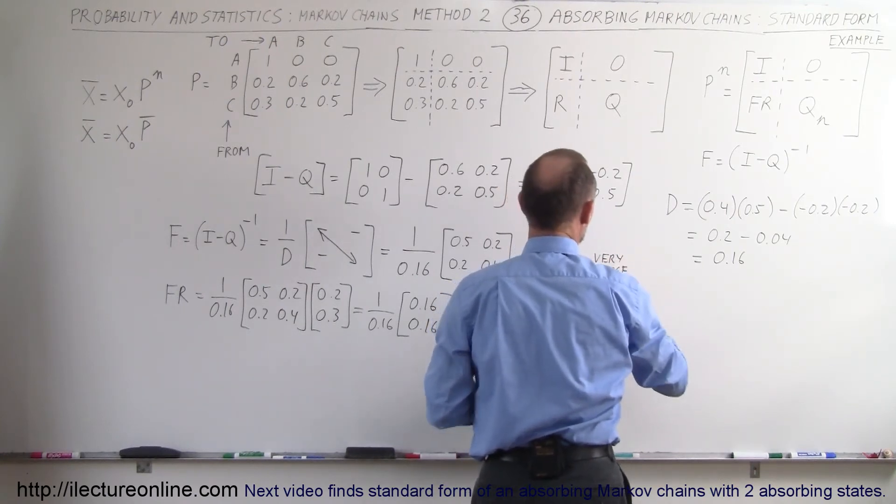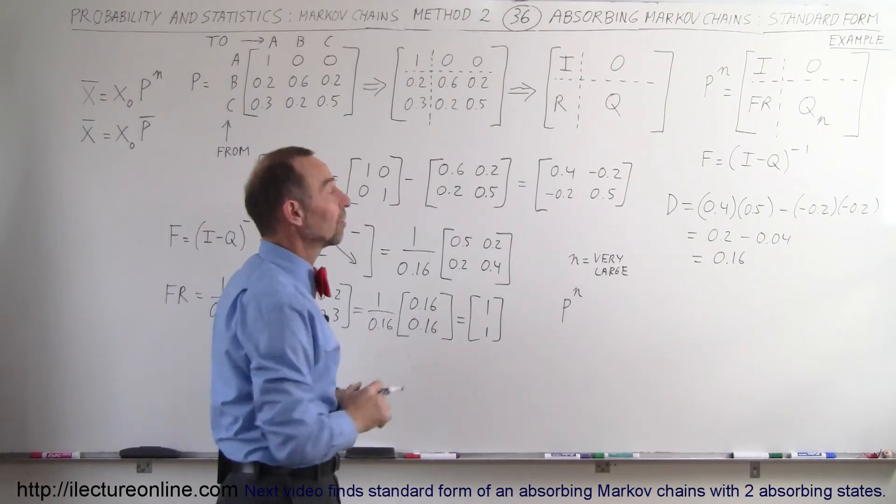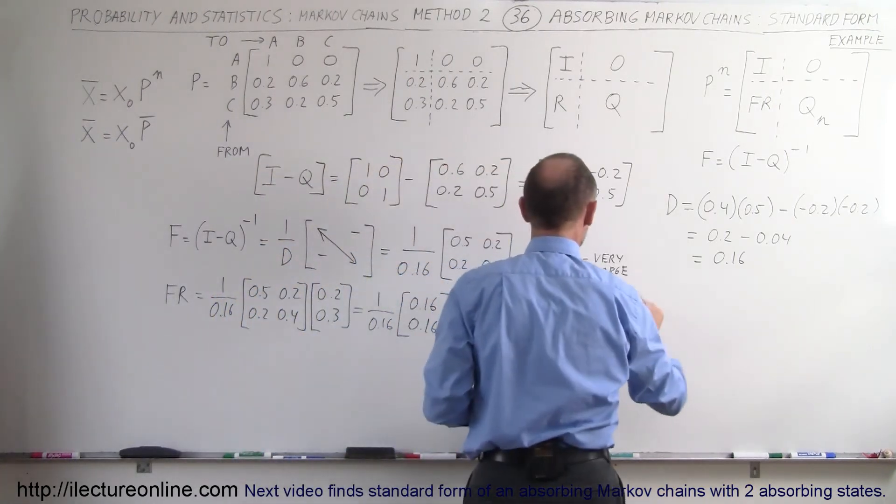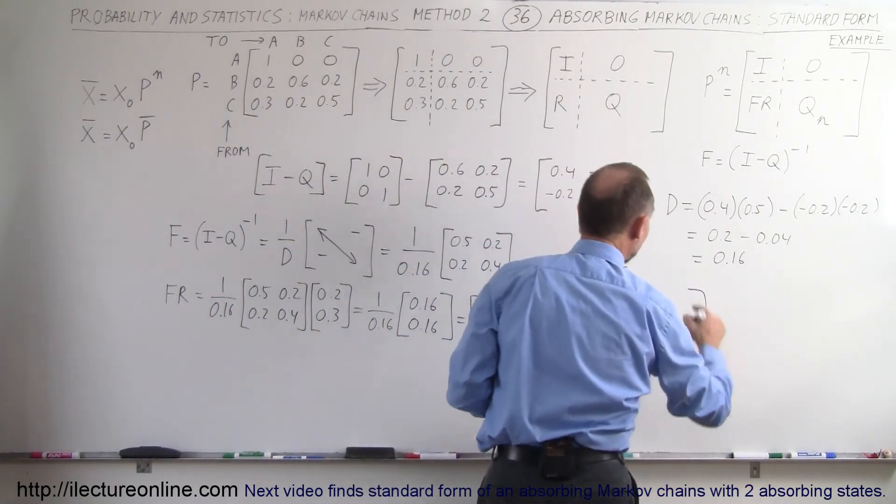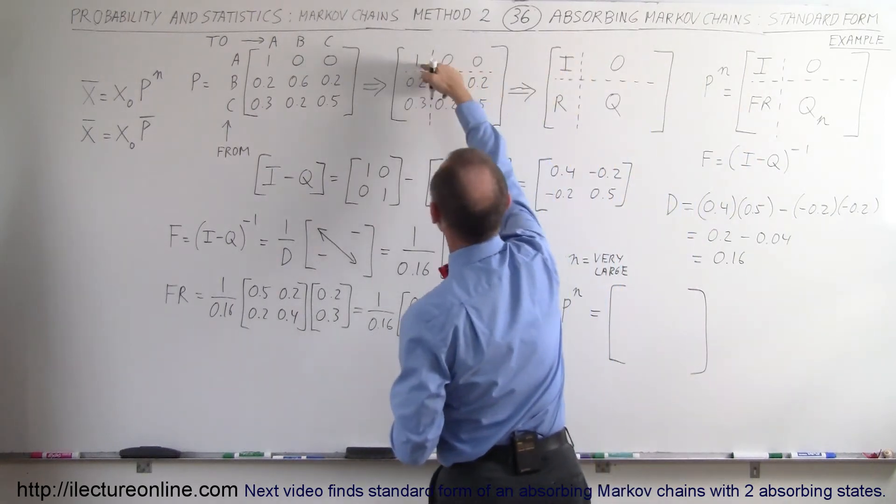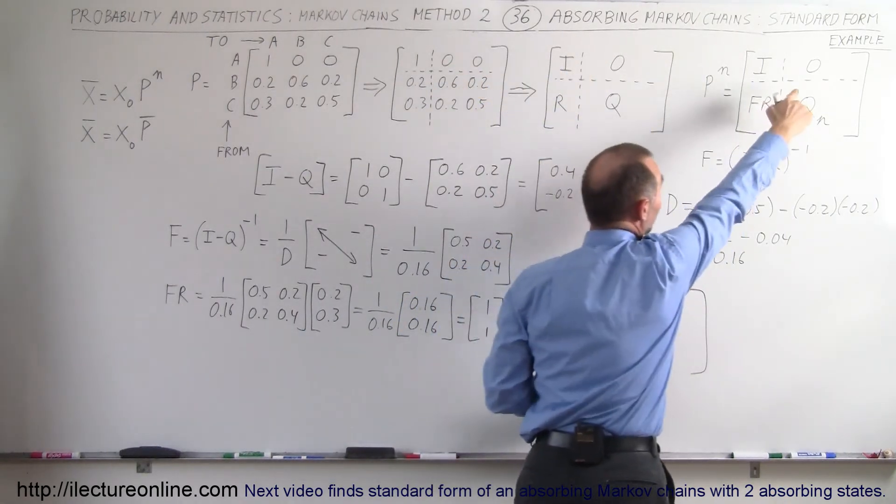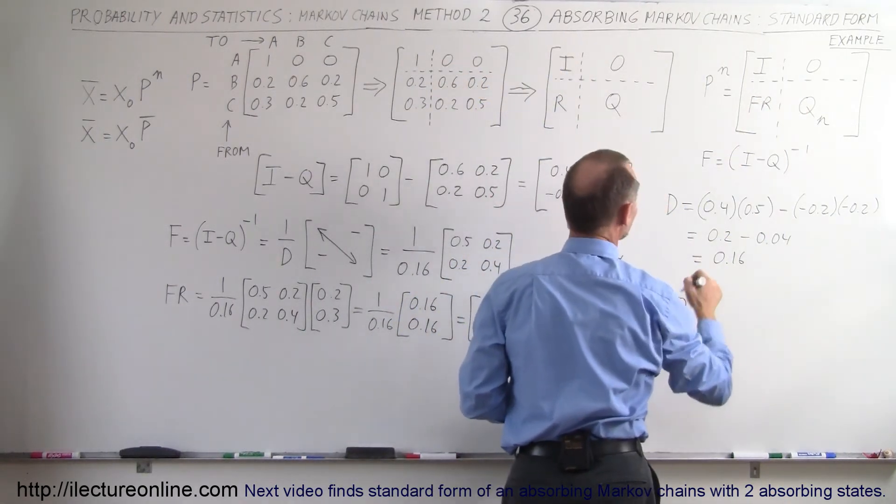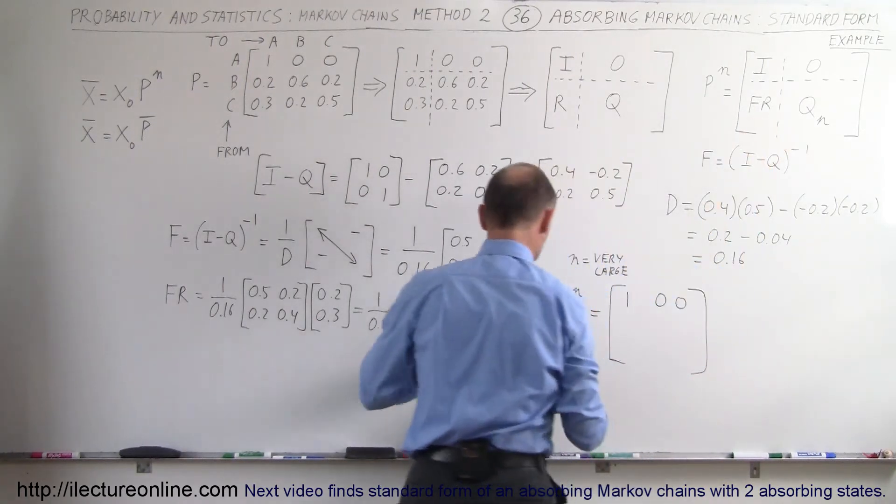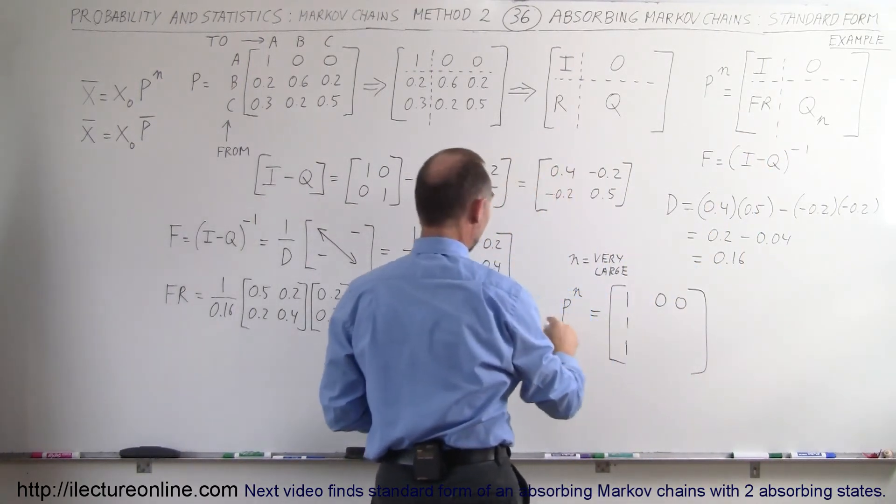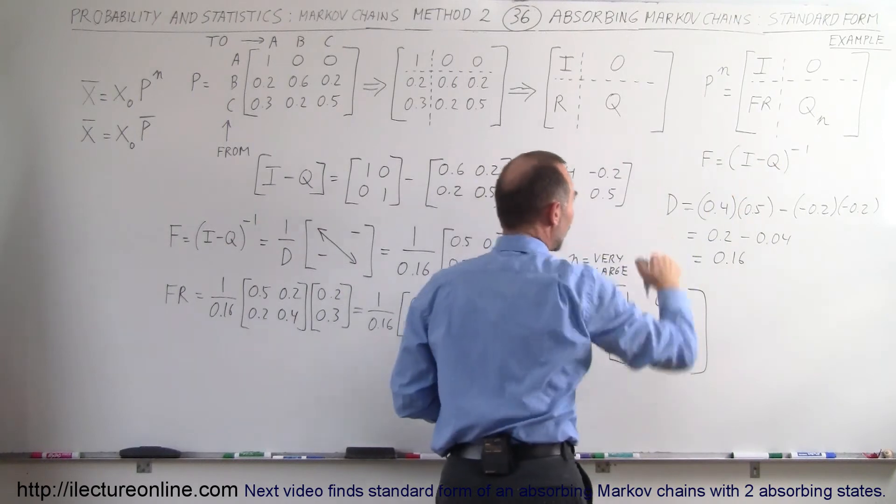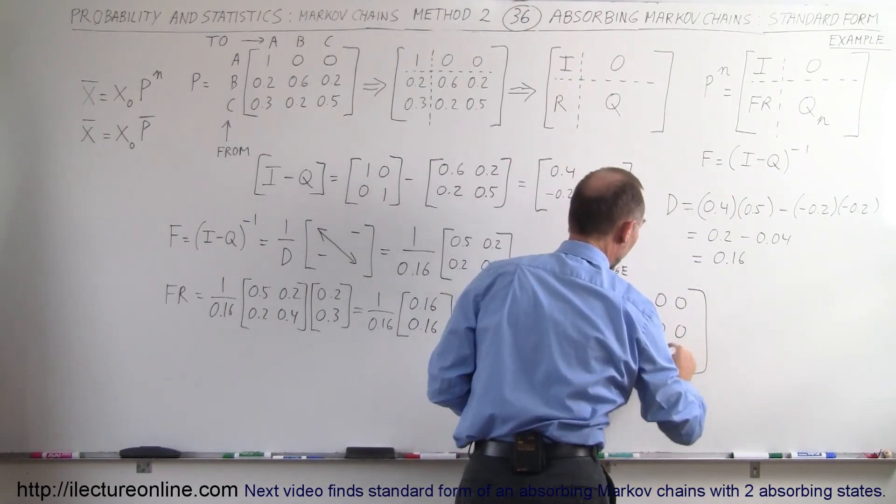And of course when N becomes very large then we end up with a stable transition matrix. So this will be equal to the identity matrix which of course here is 1, the 0 matrix which is 0, 0, 0, the F times R matrix right here which is 1 and 1, and then the Q sub N matrix which we know by definition will be 0, 0, 0, 0.